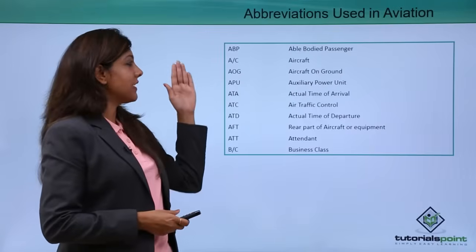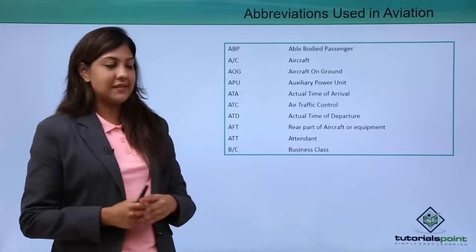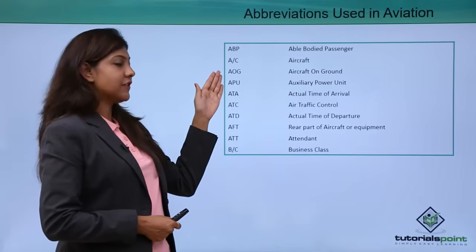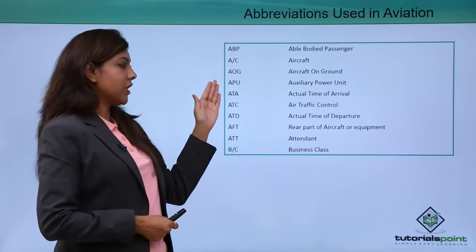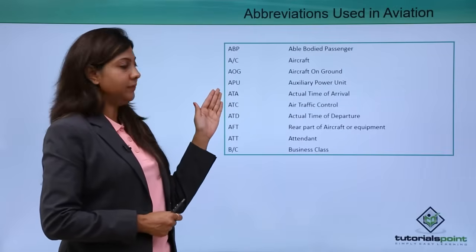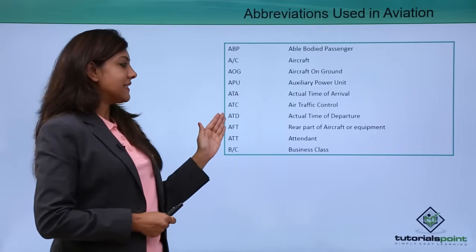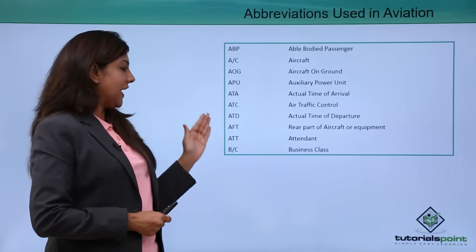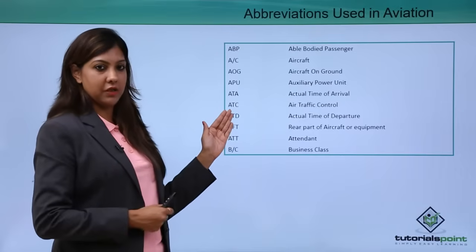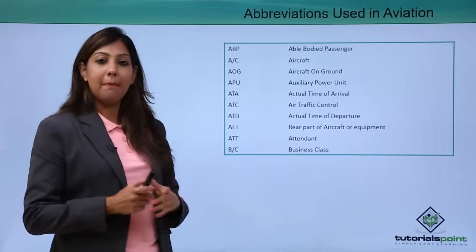Let's take a look at these short forms used in aviation. ABP stands for able-bodied passenger. AC stands for aircraft. AOG stands for aircraft on ground. APU stands for auxiliary power unit. ATA stands for actual time of arrival. ATC stands for air traffic control. ATD stands for actual time of departure. AFT stands for the rear part of the aircraft. ATT stands for attendant.